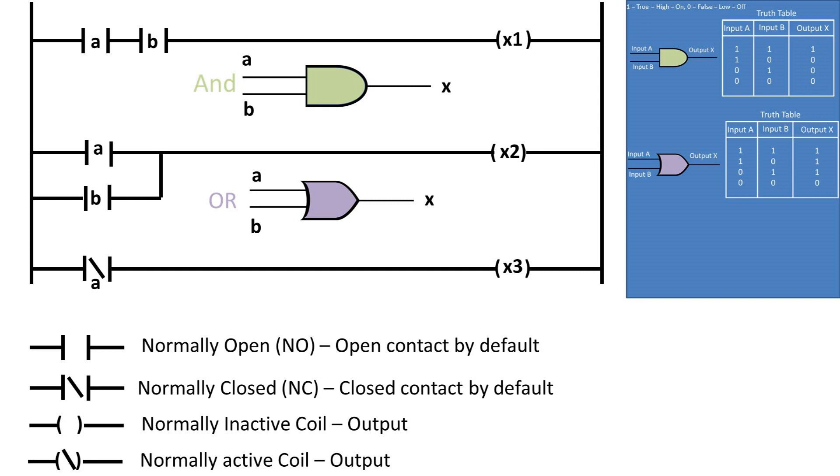If the two contacts are in parallel, then this is equivalent to an OR gate. The second rung is contact a or B. The truth table is listed to the right. If one or both of the contacts is activated, then the coil will activate.